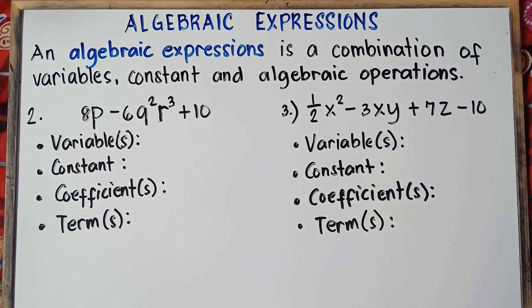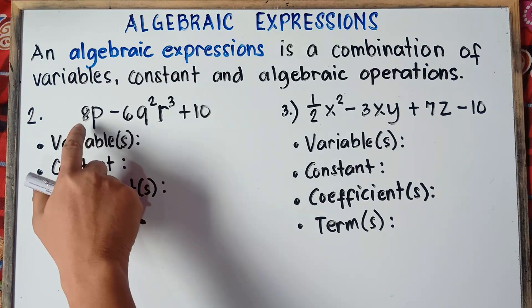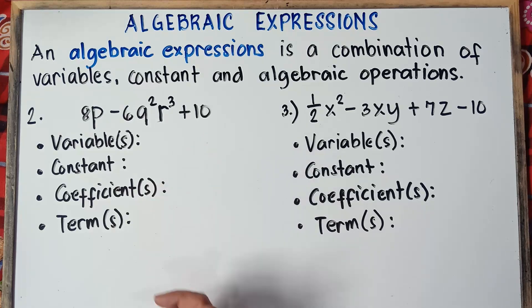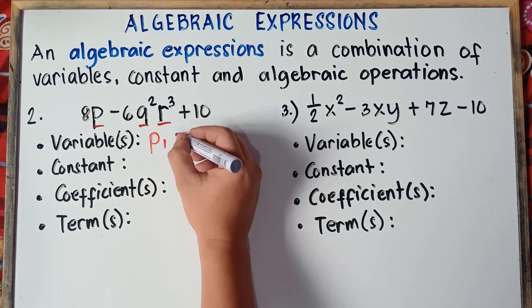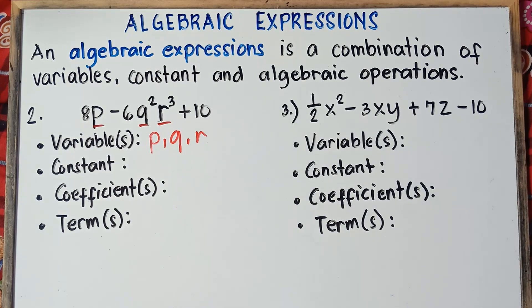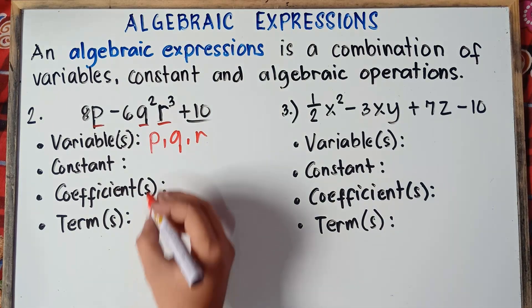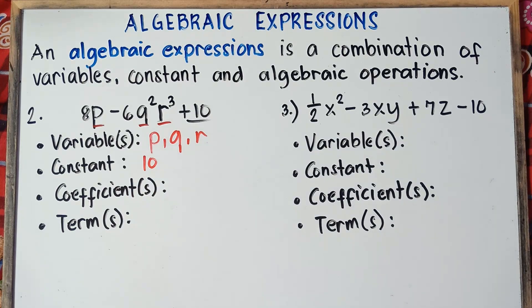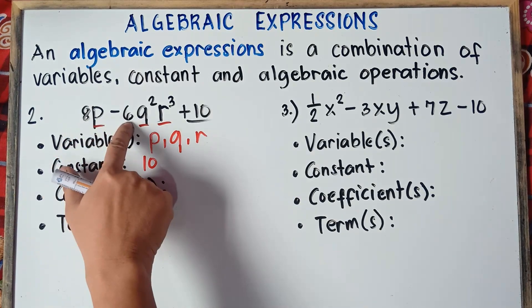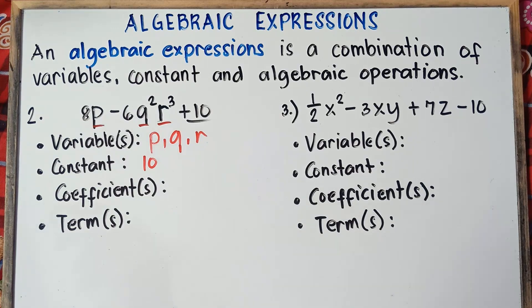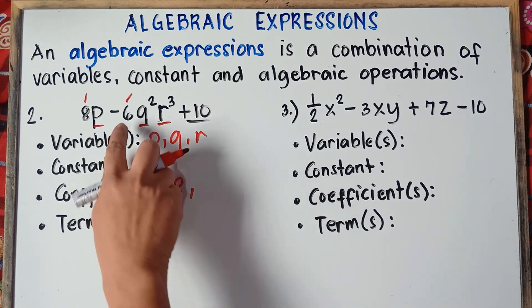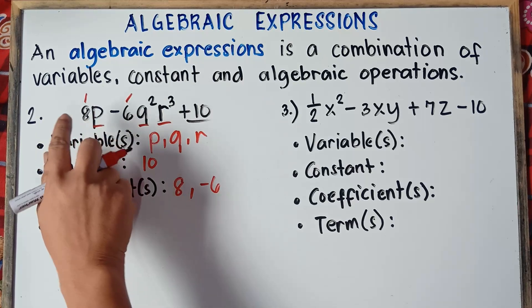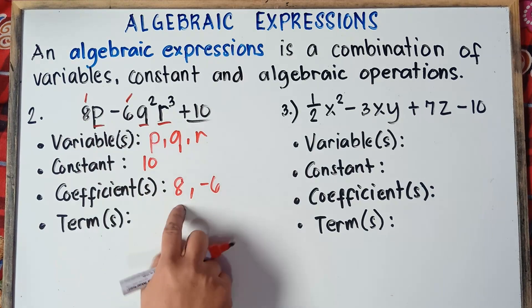Let's proceed to example number 2. Our given algebraic expression is 8p minus 6q squared r cubed plus 10. Variables are the letters: p, q, and r. The constant — the number alone — is positive 10. Coefficients are the numbers that multiply the variables: positive 8 and negative 6. Always include the minus sign.